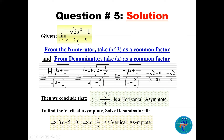Since x goes to minus infinity, x is negative, so |x| = -x. Dividing -x by x gives -1, so we pick up a negative sign outside. Taking the limit: 1/x^2 goes to 0 and 5/x goes to 0. The result is -√2 / 3. Therefore y = -√2/3 is the horizontal asymptote for x going to minus infinity.